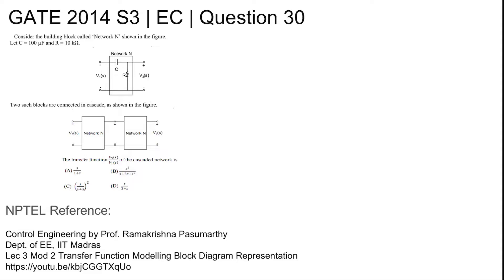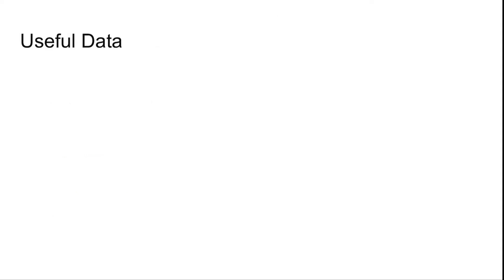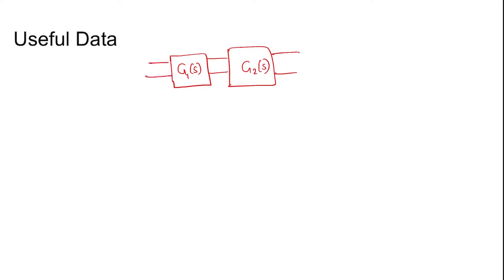For useful data, you should know that if a block having a transfer function G1(s) is cascaded with a block of transfer function G2(s), then the overall transfer function of the system, if this is input U(s) and this is output Y(s), then Y(s) by U(s) can be written as G1(s) into G2(s).